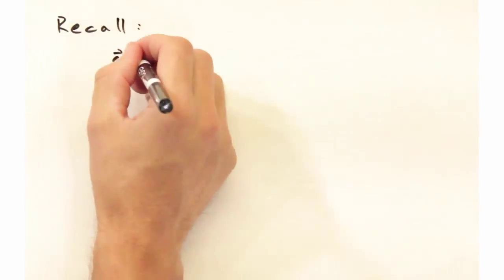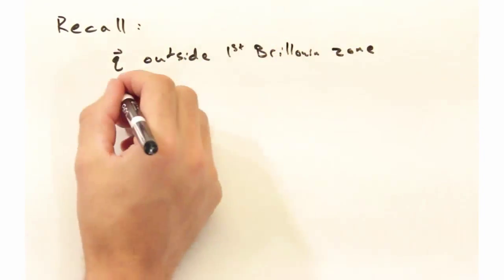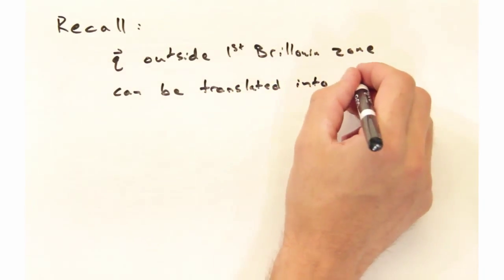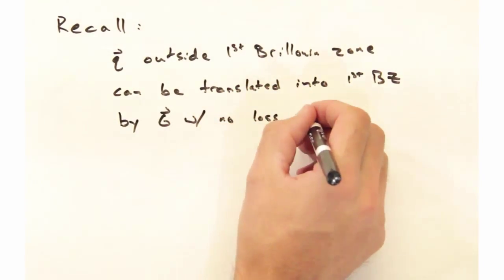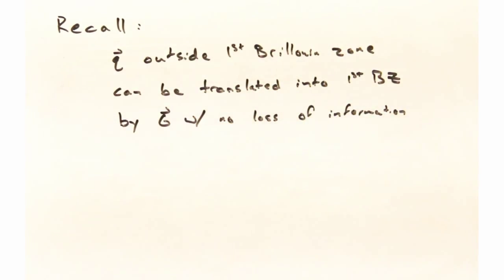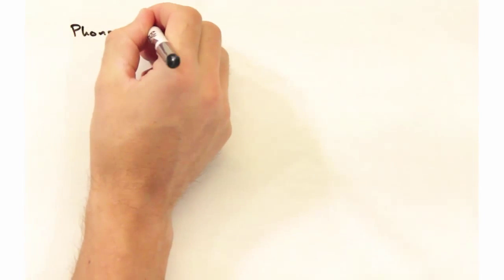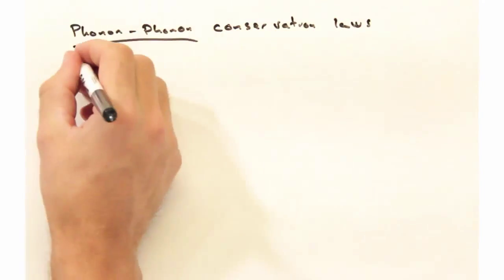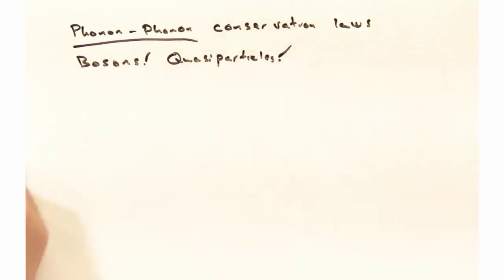The first thing to do is recall that for phonons outside of the first Brillouin zone, these phonons can be translated back into the first Brillouin zone by some reciprocal lattice vector g with no loss of information. This was the whole Nyquist frequency argument. When it comes to phonons scattering off of other phonons, we have to think about conservation laws. Remember, phonons are bosons and quasi-particles, so we can create them, we can destroy them, and really that phonon creation and destruction is at the heart of phonon-phonon scattering.